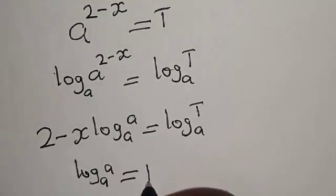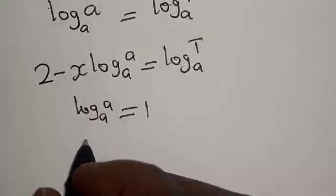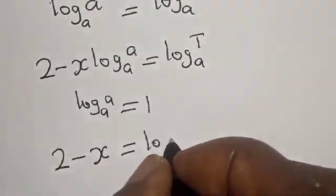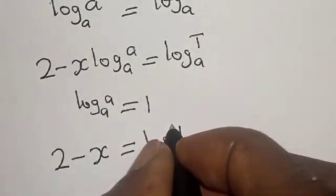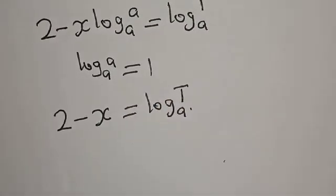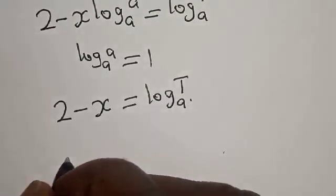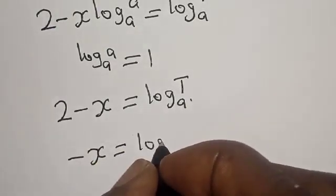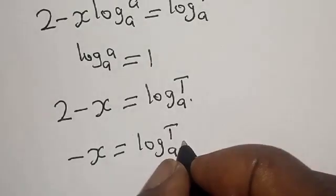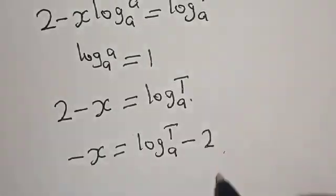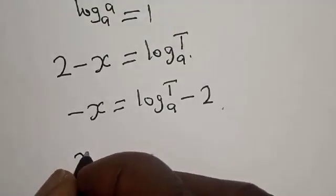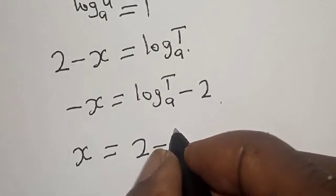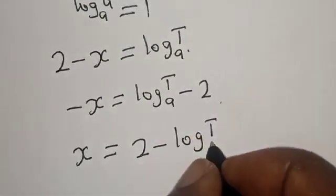We have 2 minus s is equal to log t base a. We are looking for s, so let's collect like terms: minus s is equal to log t base a minus 2.